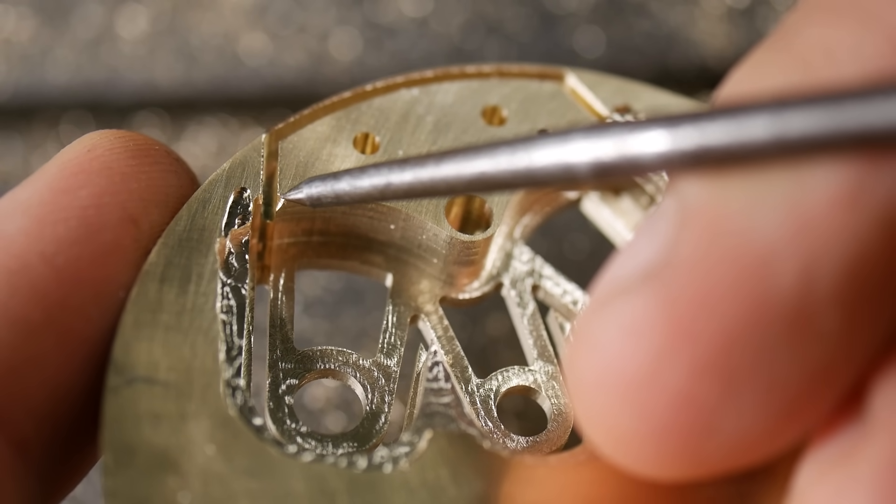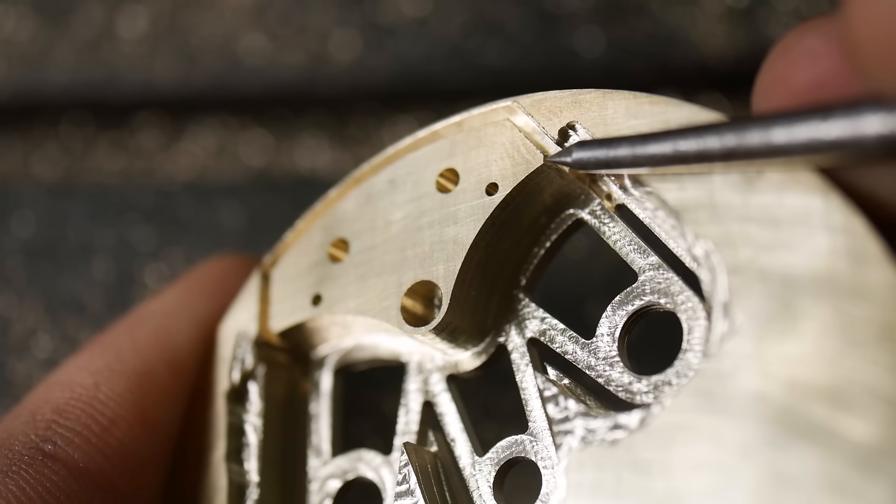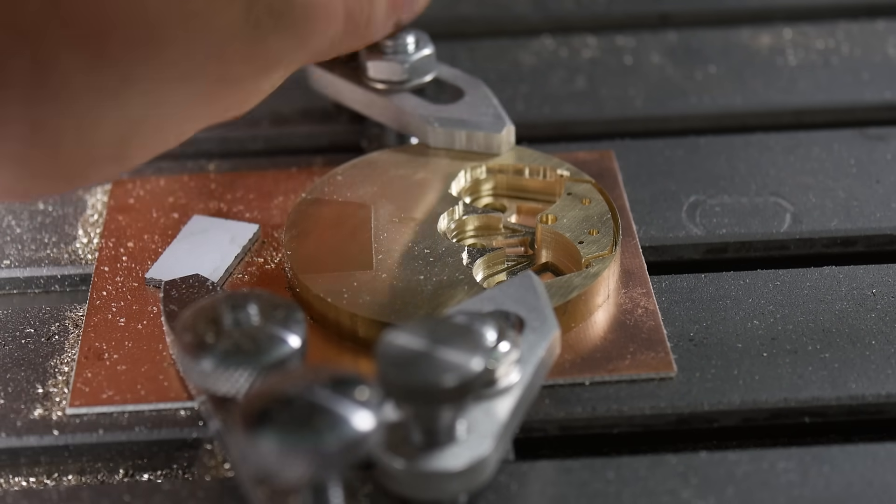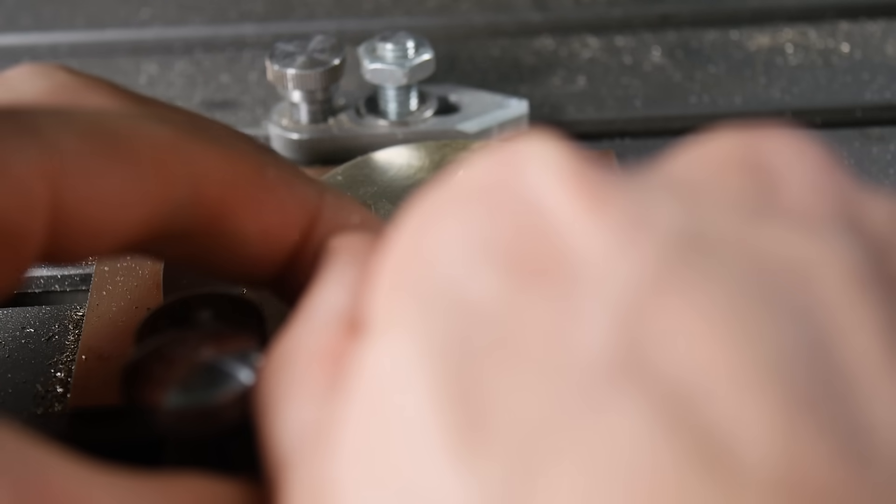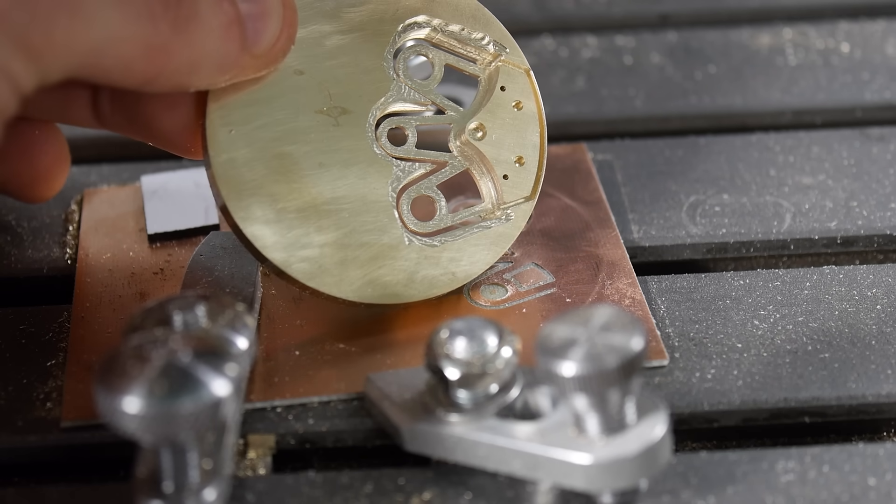I thought about starting again, but decided that a chamfer on this edge would not look out of place and would conveniently hide this embarrassing aberration. Of course, this meant I could not completely cut the part away from the stock on the pantograph, and I had to revert to using a piercing saw.